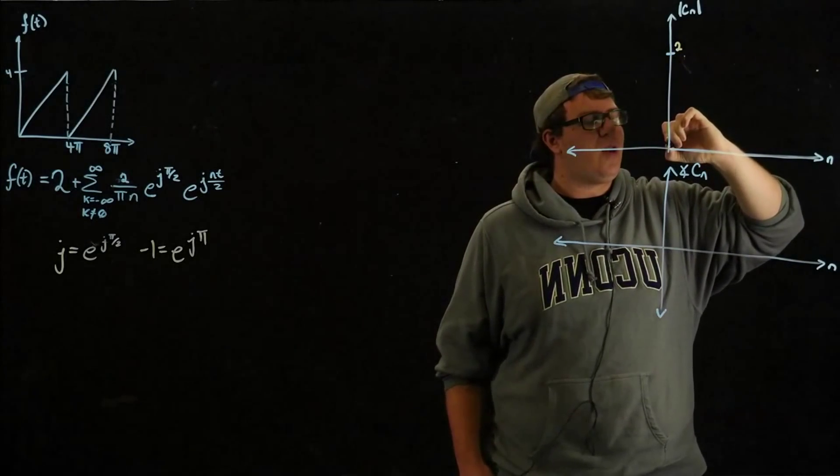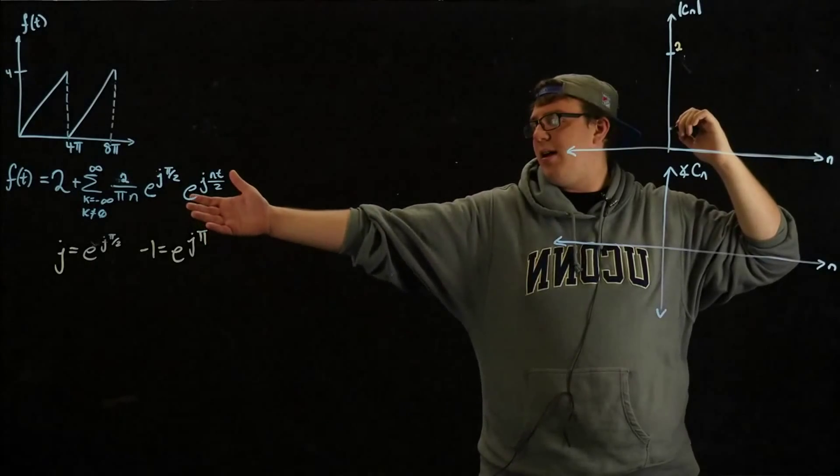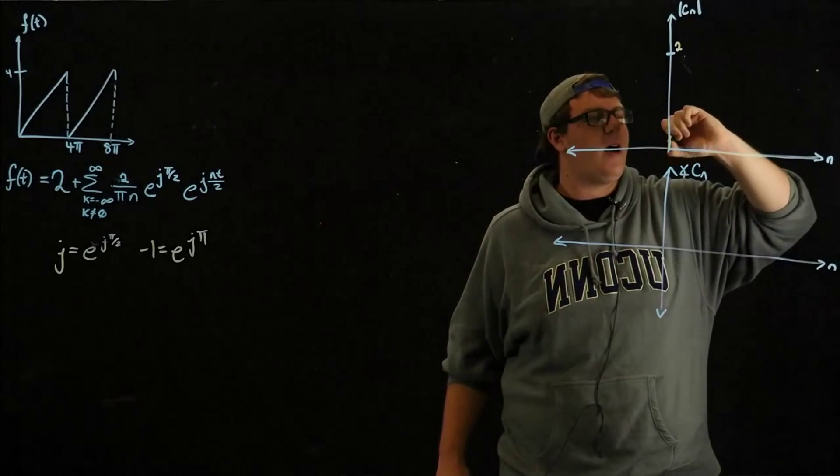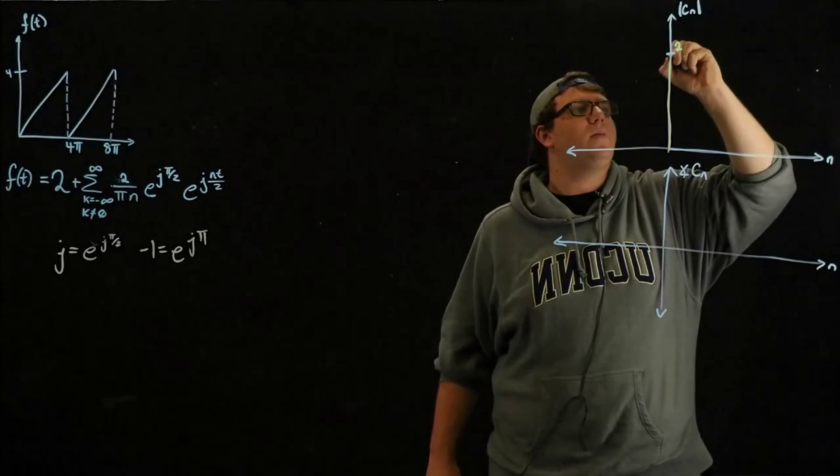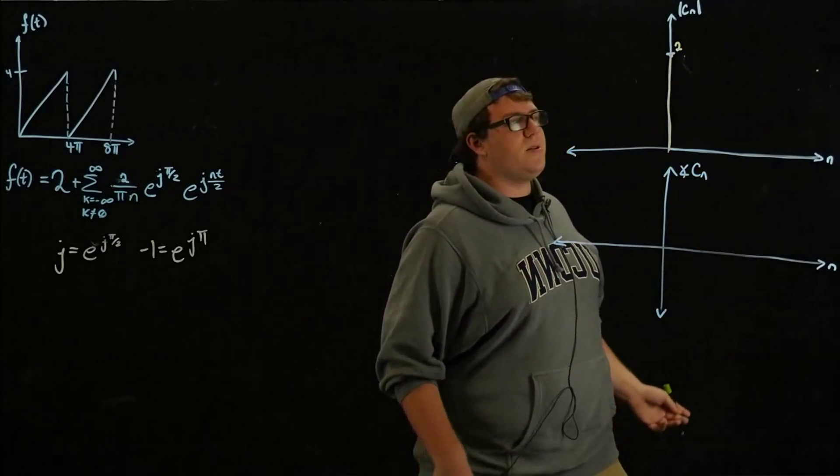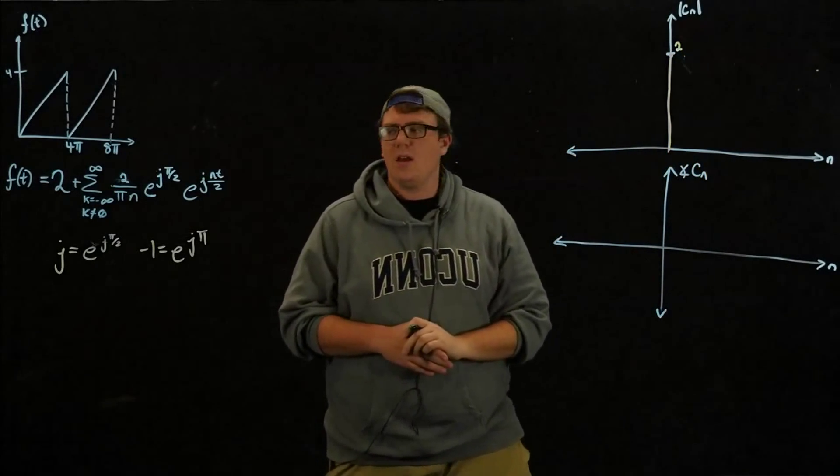And this plot, because N is only integer value, this plot is a discrete-valued plot. So we have a stem plot at 2.